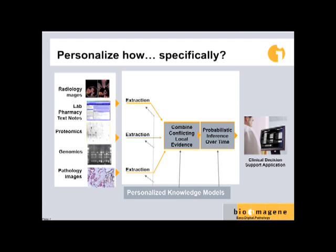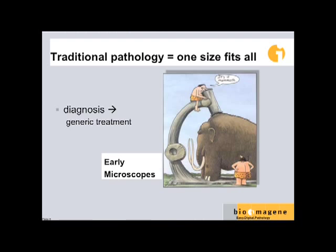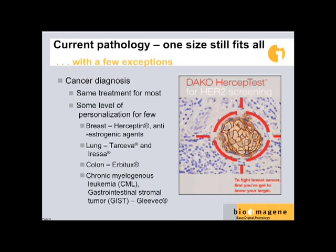Very quickly rewinding, specific to pathology: if I rewind the tape to even five years ago, it was one size fits all. Even today it's mostly one size fits all, with some very few exceptions. For instance, if a person has stage 2 breast cancer and they are to get Herceptin, there is a companion diagnostic which is pathology-based, where you do a little test based on a tissue sample and say, will this patient respond to Herceptin or not? If the answer is yes, you give them Herceptin; if no, you don't. So there's some degree of personalization already.